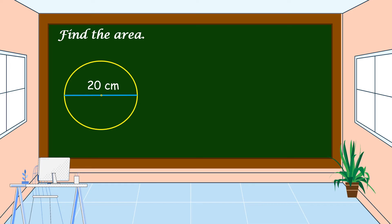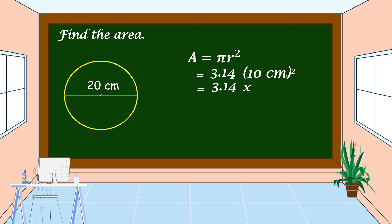Another example with a diameter of 20 centimeters. To find the area, we're going to use this formula: Area is equal to pi times radius squared. What is the estimated value of pi? Yes, 3.14. And what is the radius of this circle having a diameter of 20 centimeters? Fantastic — it is 10 centimeters. So let's substitute into our formula: 3.14 times 10 centimeters raised to the power of 2.